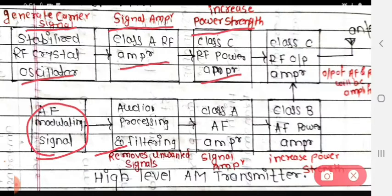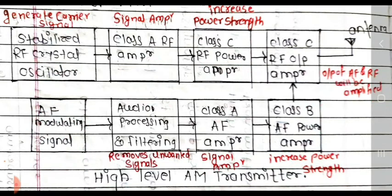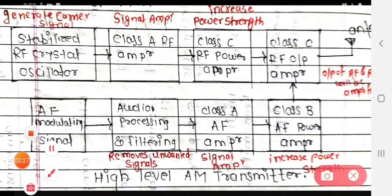The audio processing and filtering block: its function is to remove unwanted signals coming from the AF modulating signal. The class A AF amplifier: its function is to act as a signal amplifier. The class B AF power amplifier: its function is to increase the power strength. This signal then goes to the class C RF output amplifier, whose function is to amplify the combined output of AF and RF.